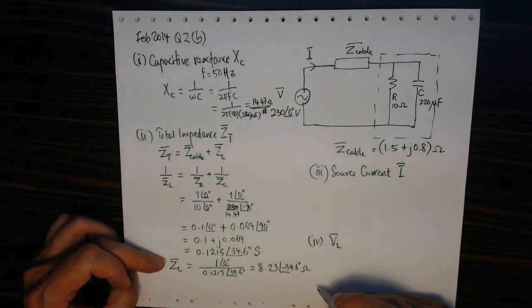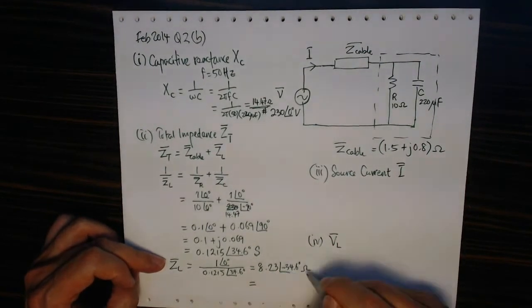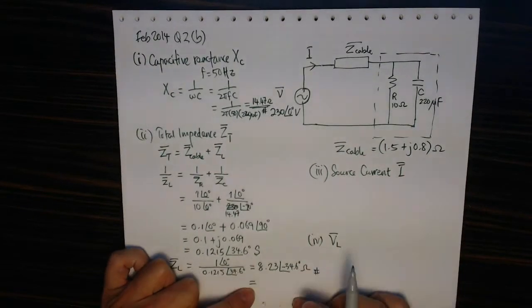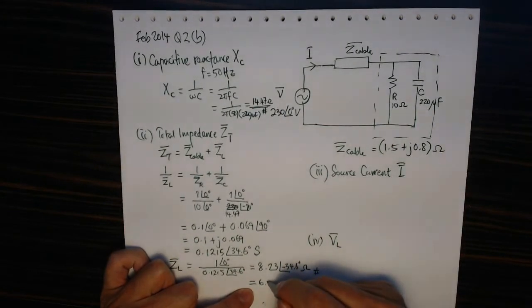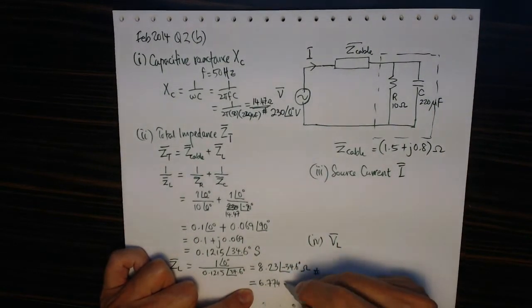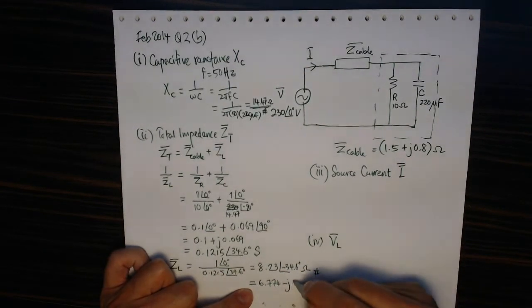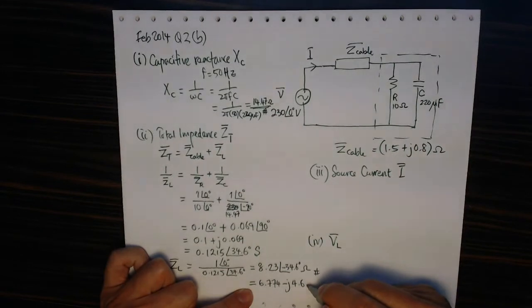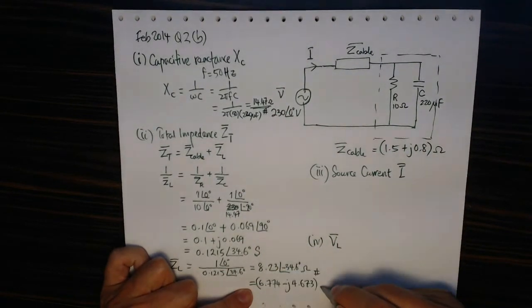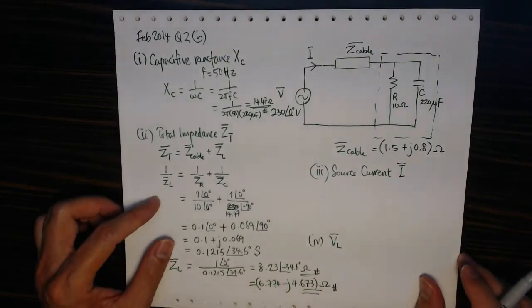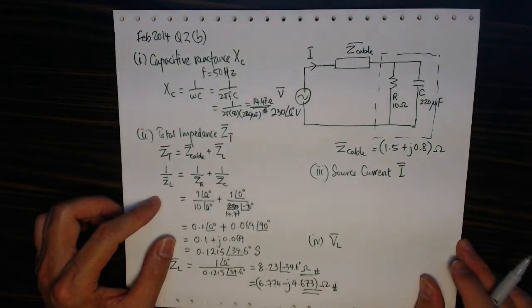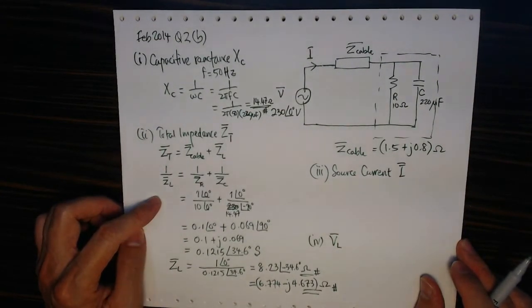But the question wants me to give the answer in the rectangular form, so I convert this back to the rectangular form. That will be 6.774 minus j 4.673.